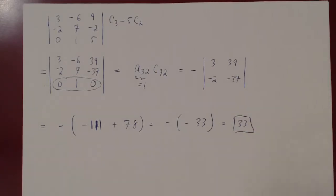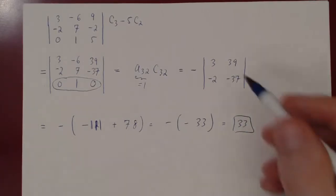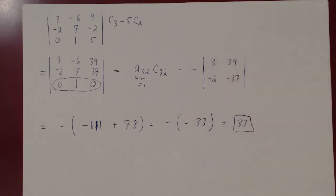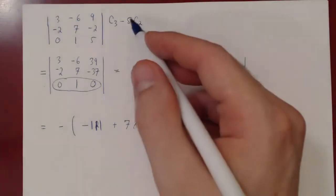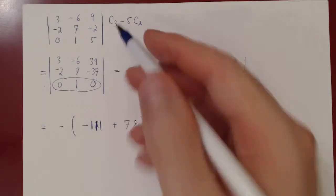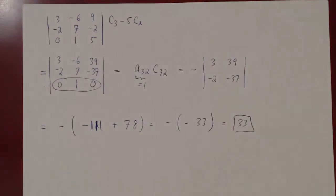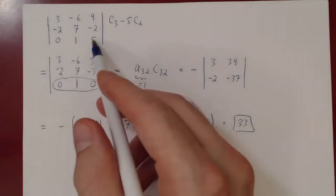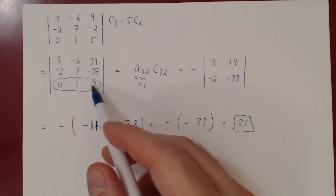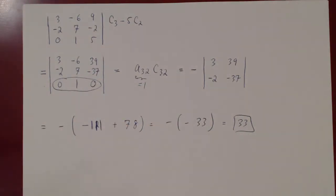What's nice about this is we went from two cofactors to only one cofactor. That's why column and row operations are really neat. The key is to use whichever gives you the easiest way of finding zeros. Here the column operation was easier; if row operations are easier, use those instead.